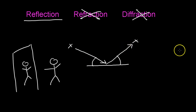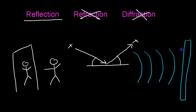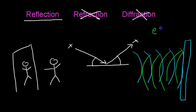So that's reflection. For sound waves, let's say we have a wall and the sound waves are coming this way. When it hits the wall, it will bounce back. The name for that — we call that an echo, when that sound bounces back to us. Simple enough: reflection.